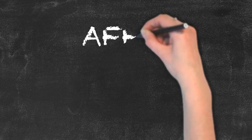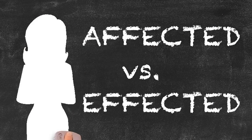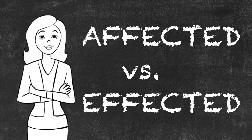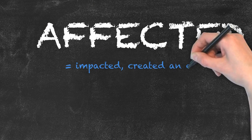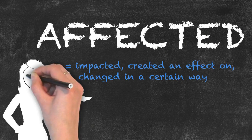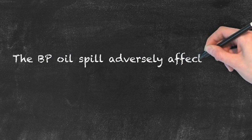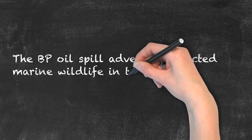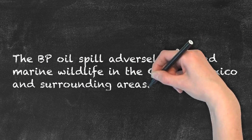Affected vs. Effected. This is another set of words that is easily confused in English. Let's take a closer look. The word 'affected' means impacted, created an effect on, and changed in a certain way. For example, the BP oil spill adversely affected marine wildlife in the Gulf of Mexico and surrounding areas.